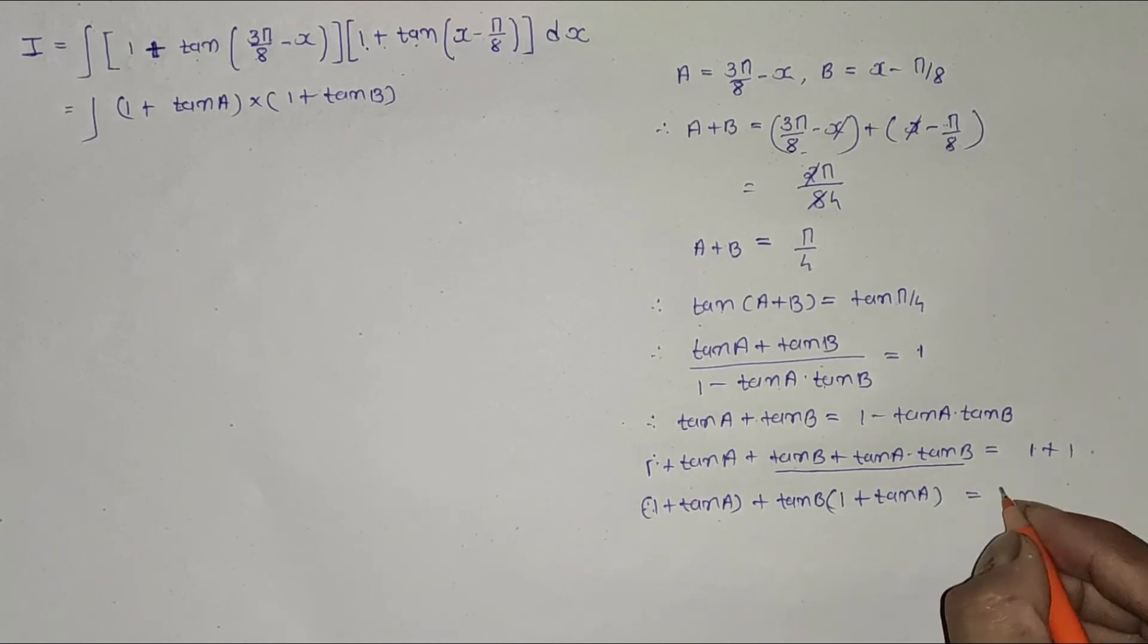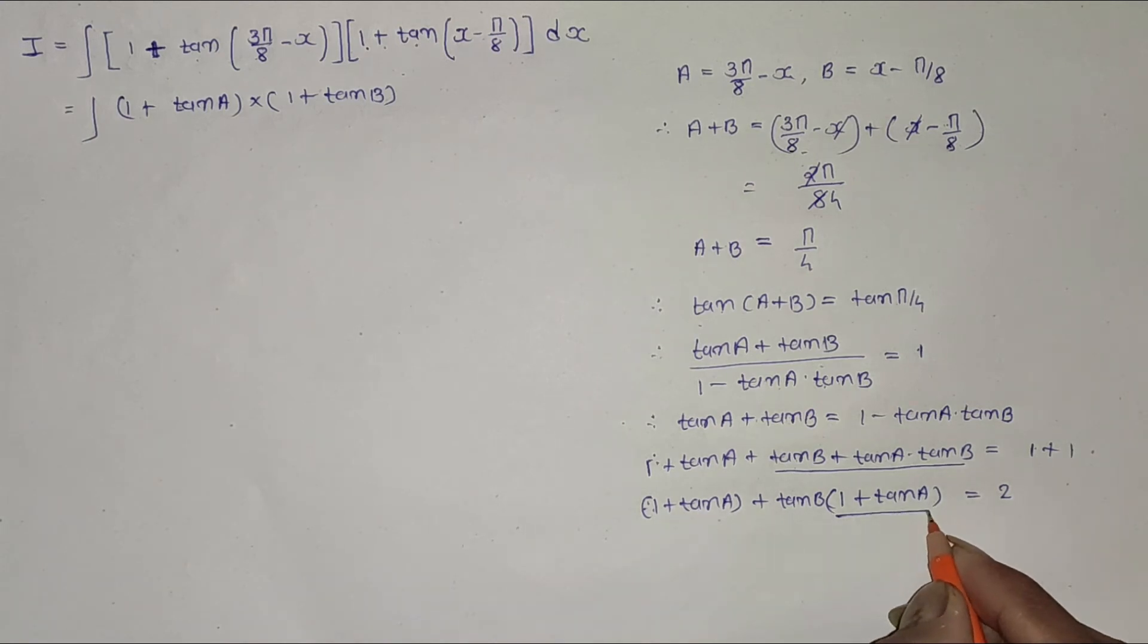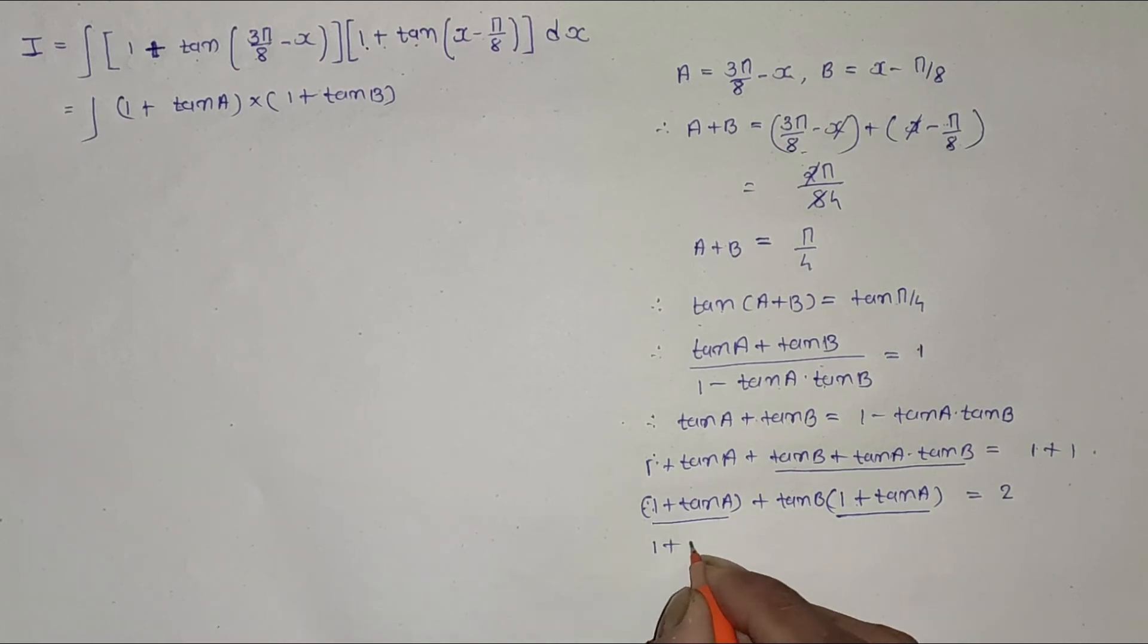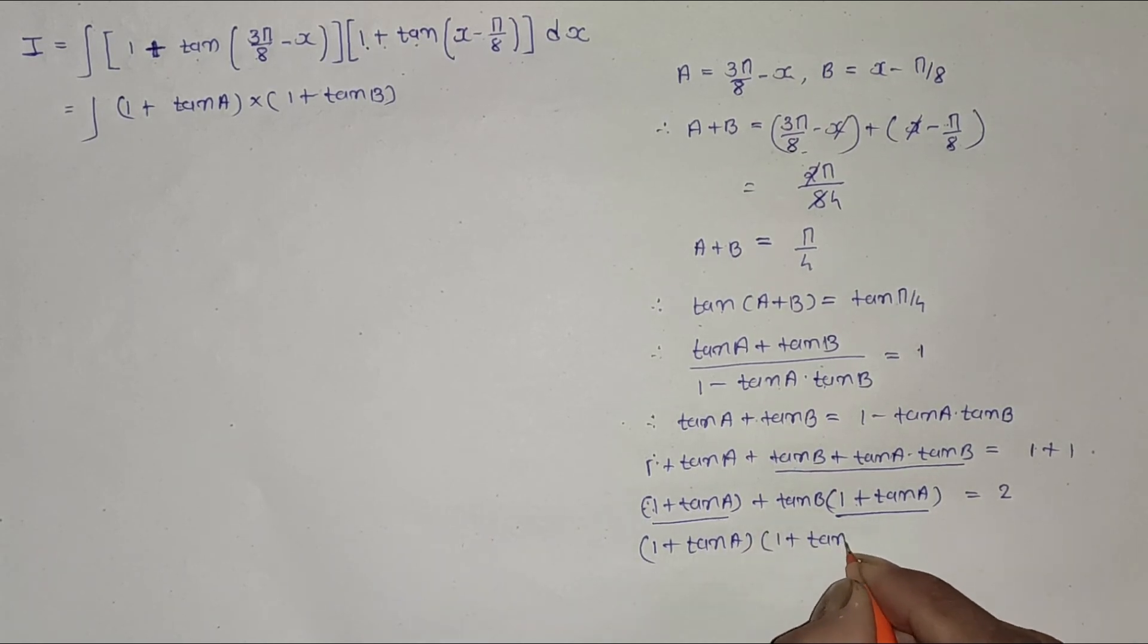Now take (1 + tan a) common, so I get (1 + tan a)(1 + tan b) equals 2.